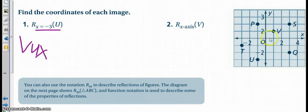So x equal to negative 3 means that when x is negative 3, that creates a vertical line right over here, that then I can reflect my point u across.